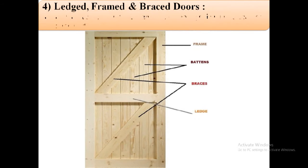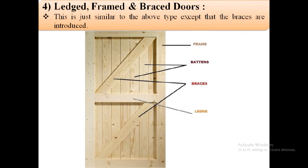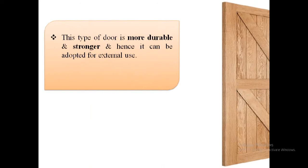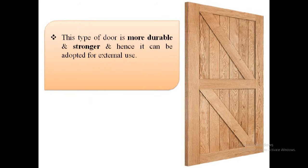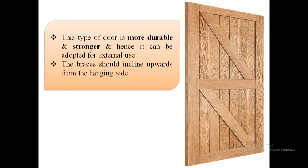The fourth type of door is ledge, frame and brace doors. This is just similar to the ledge and frame doors except that the braces are introduced. This image shows the ledge, frame and brace doors which consist of the frame, braces, ledges, and battens. Ledge, frame and brace doors are more durable and stronger and hence can be adopted for external use. These braces should incline upwards from the hanging side.